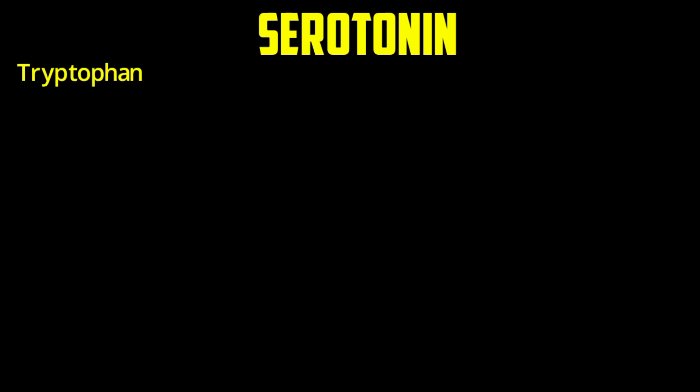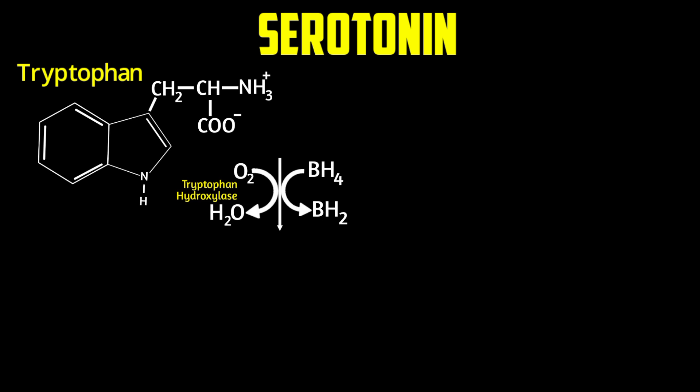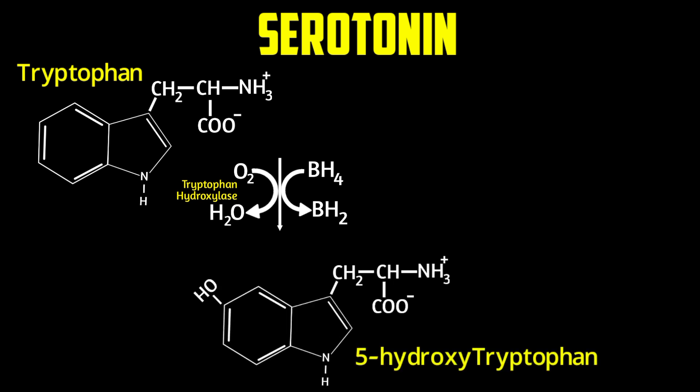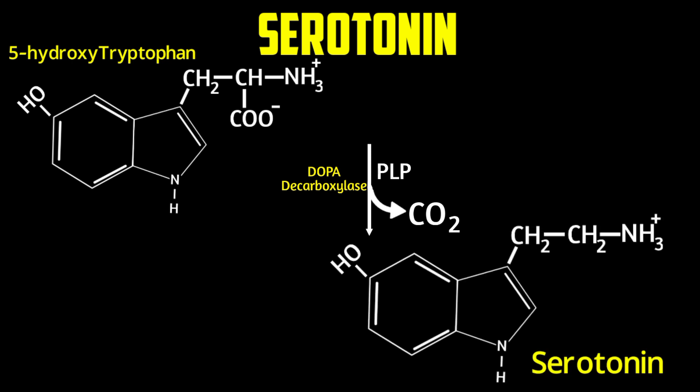Serotonin is another important neurotransmitter. The first enzyme in the pathway is tryptophan hydroxylase, which uses a mechanism similar to tyrosine hydroxylase and requires BH4 (tetrahydrobiopterin) to hydroxylate the ring structure of tryptophan, forming 5-hydroxytryptophan. The second enzyme is DOPA decarboxylase, which removes CO2 from 5-hydroxytryptophan to produce serotonin, requiring pyridoxal phosphate (PLP) as cofactor.